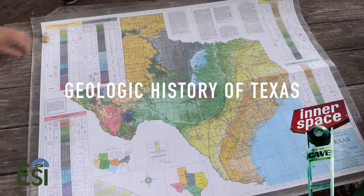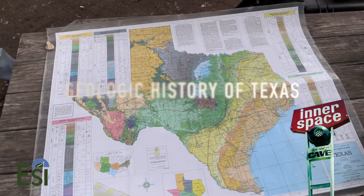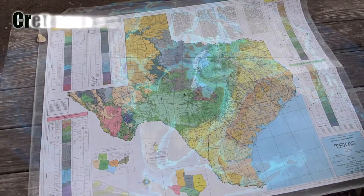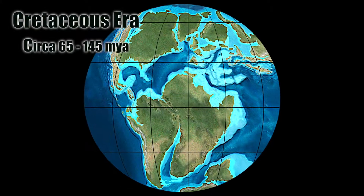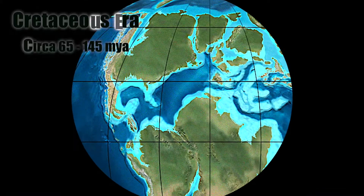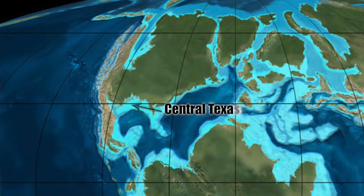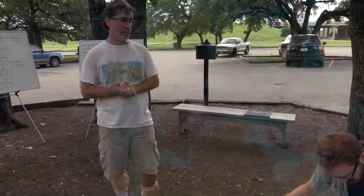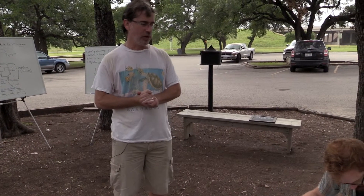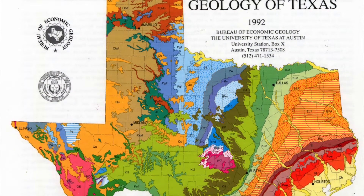Let's briefly review the geologic history of Texas, starting in the Cretaceous period. The Cretaceous was a time of relatively high sea level, with high levels of greenhouse gases in the atmosphere and very little to no ice on the planet. Warmer oceans resulted in a higher sea level. The green area we see here is the Edwards Plateau.